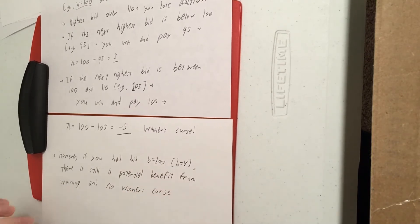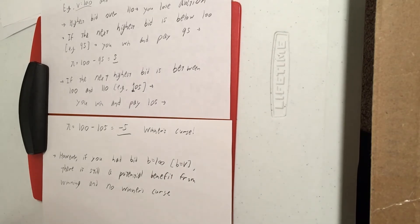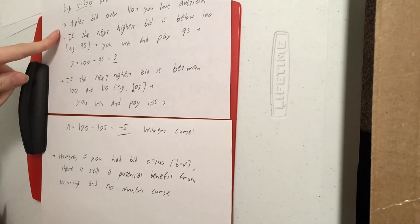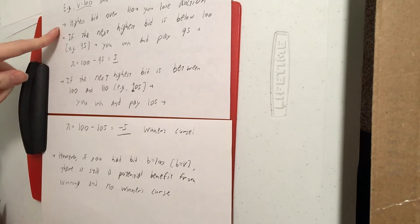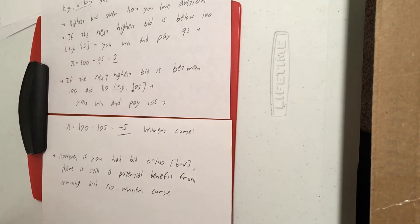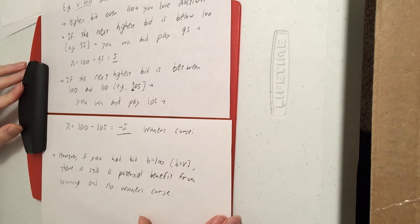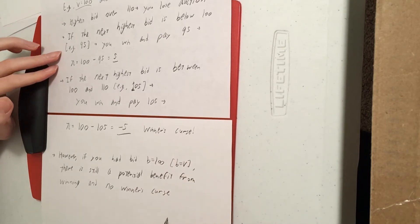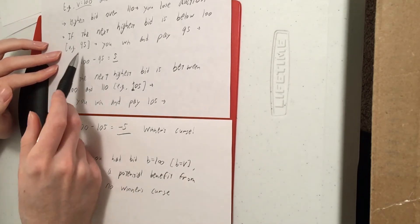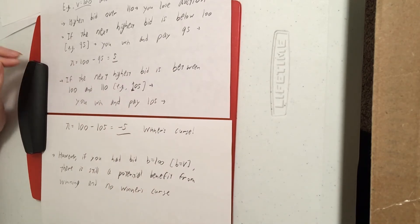Let's verify that claim with the same three scenarios. If the highest bid is over 110, you lose the auction — you would have lost whether you bid 110 or 100, so it doesn't matter. If the next highest bid is below 100, like a bid of 95, you still win the auction. You don't pay the 100 you bid — you pay the next highest person's bid of 95, and you still get that benefit of 5.